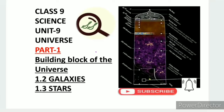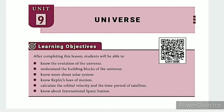From SS Class 9 Science, Unit 9: Universe, Part 1 — Building Blocks of the Universe. Topics include 1.2 Galaxies and 1.3 Stars. The lesson-level learning objectives are: know the evolution of the universe, and understand the building blocks of the universe.